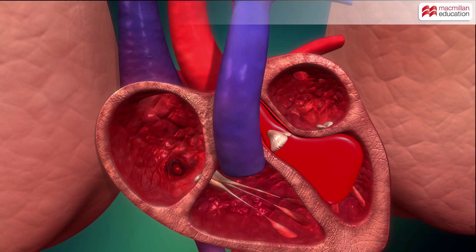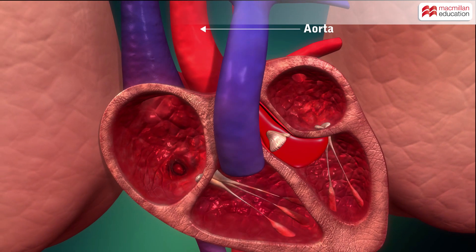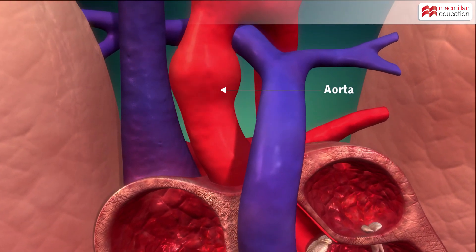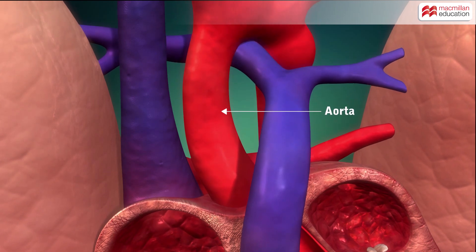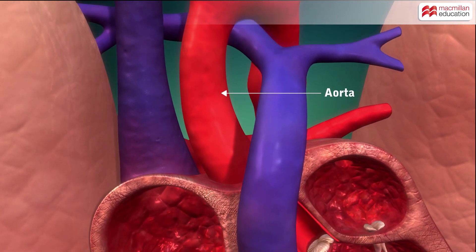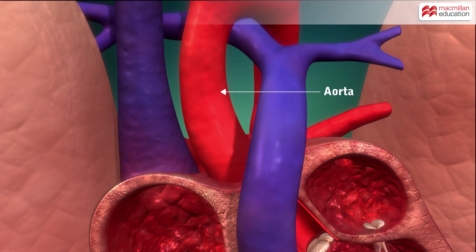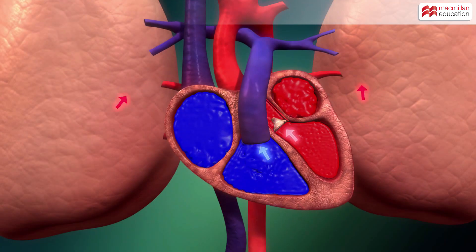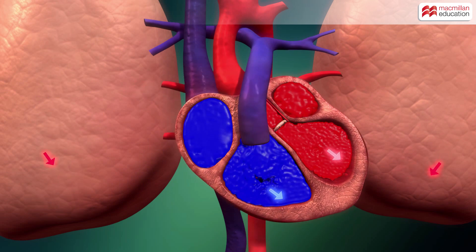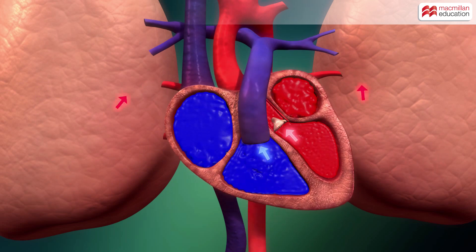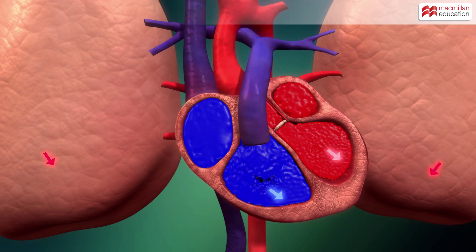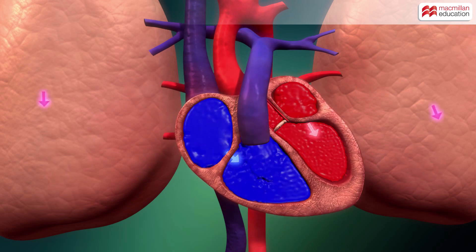The left ventricle opens into an artery called the aorta and on contraction pushes the blood into the aorta. The aorta is the main and largest blood vessel that distributes blood to different parts of the body. After it gives up its oxygen, the blood — now low in oxygen — is again returned to the right atrium, and the whole process of blood circulation is repeated.